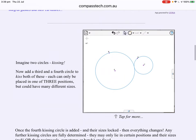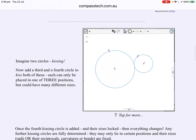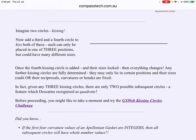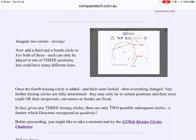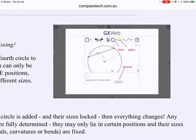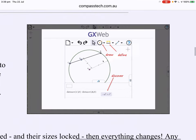Imagine two circles kissing. Now, I had a third and a fourth to kiss both of these. Let's have a look at how this can be done in GXWeb.